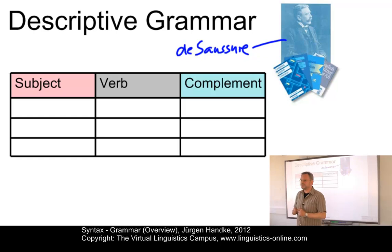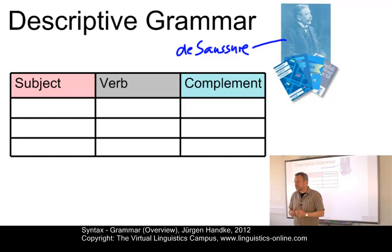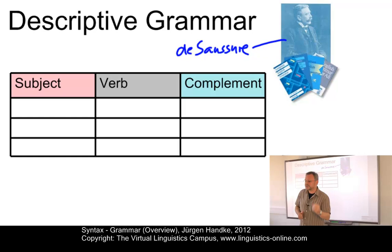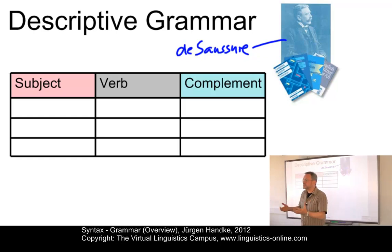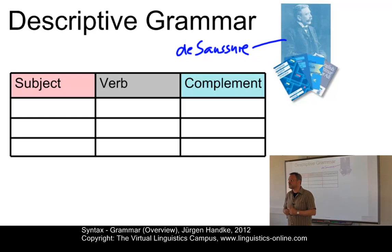A descriptive grammar is not primarily interested in good or bad, correct or incorrect use of a language. Rather, it wants to provide a precise description of the facts. Reference to normative principles or analogies with classical languages such as Latin are of no use. A descriptive grammar describes the actual grammatical state of a language.